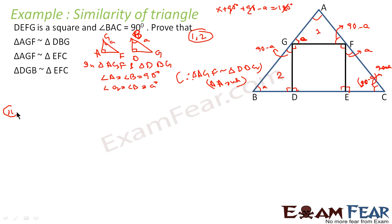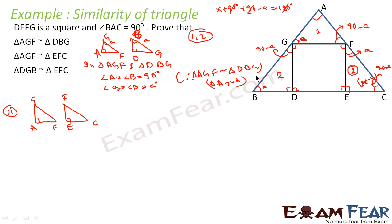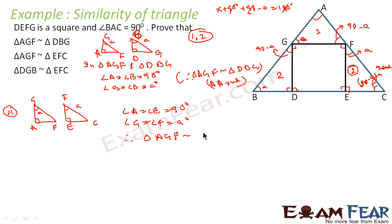In the second case, we are comparing triangle AGF and triangle EFC. Angle A in triangle AGF is 90, and angle E in triangle EFC is also 90. We have two right-angle triangles. Angle G equals angle F, both equal to A degrees. Therefore, angle A equals angle E equals 90 degrees, and angle G equals angle F equals A degrees. Therefore, triangle AGF is similar to triangle EFC by AA.